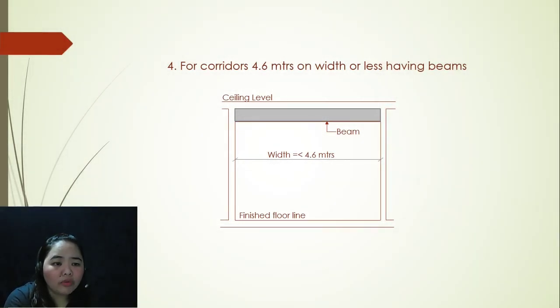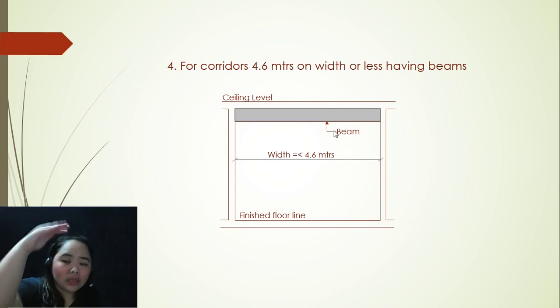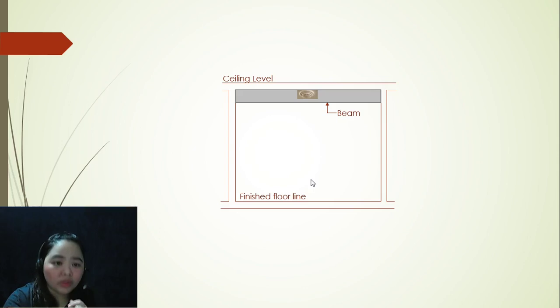Now moving on to the fourth argument. For corridors, 4.6 meters on width or less having beams. Looking at this picture over here, the width of the corridor should be less than or equal to 4.6 meters. And then there is the beam at the top. So you can put your smoke detector here, either on the underside of the ceiling or at the bottom of the beam, or you can also put it on the side wall.